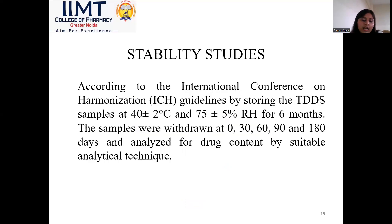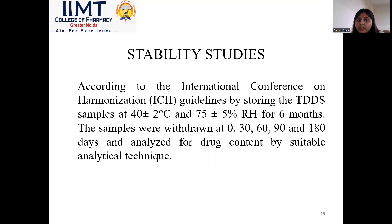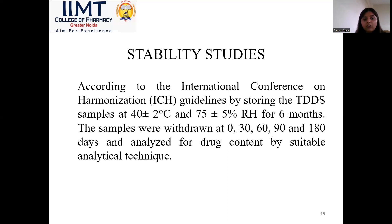The last method is stability studies — analyzing how stable the formulated patch is. According to the International Conference on Harmonization (ICH) guidelines, TDDS samples are stored at 40 ±2°C and 75 ±5% relative humidity for 6 months. Samples are withdrawn at 0, 30, 60, 90, and 180 days — at 30-day intervals — and analyzed for drug content using suitable analytical techniques.